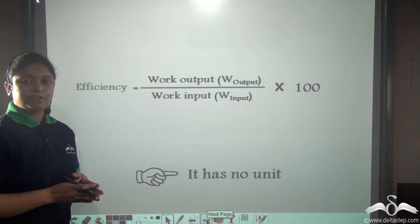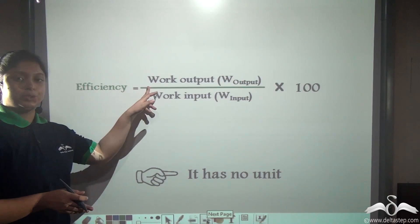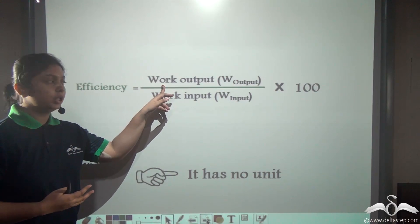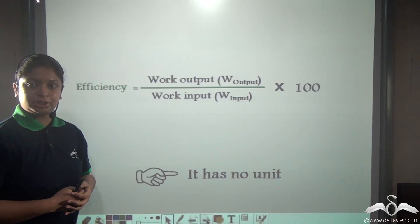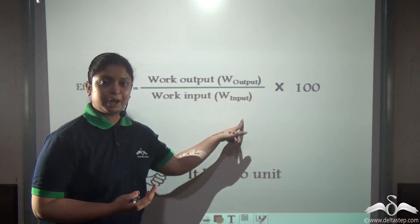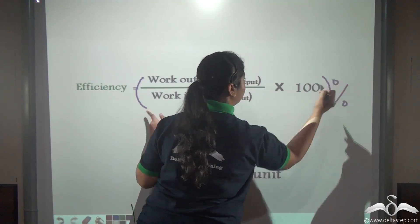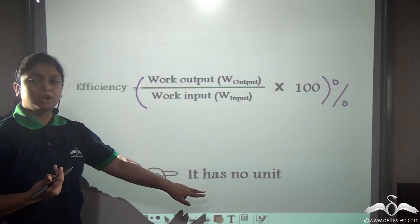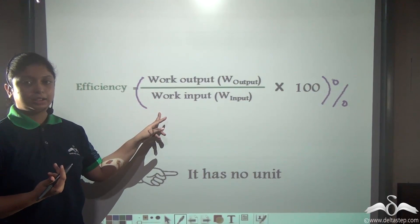The efficiency of a machine expresses how much work the machine does in moving the load. It is the work output — work done by the machine on the load — divided by the work input — the work we put into the machine — and is expressed as a percentage by multiplying by 100. Since we are dividing work by work, efficiency has no unit.